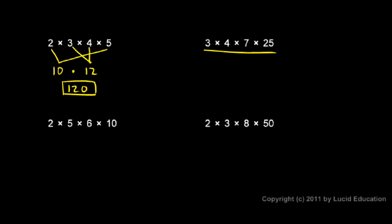Same thing happens over here. Watch this. If I look at the 4 and the 25, 4 times 25 is 100. And then I still have to multiply the 7 and the 3. That gives me 21. So I can think of this as 21 times 100, which is 2100.